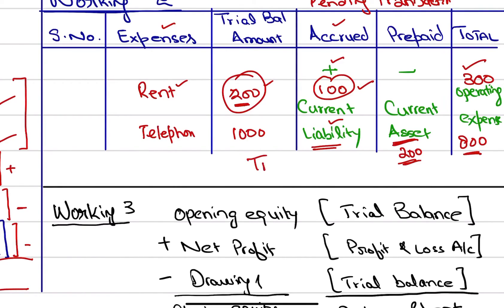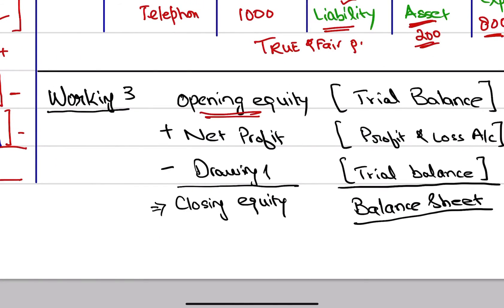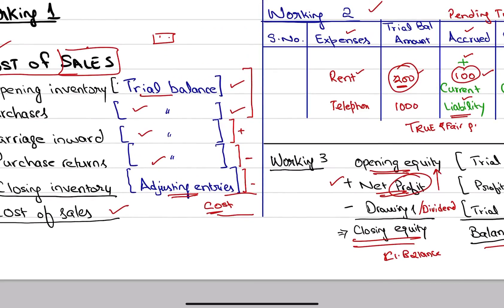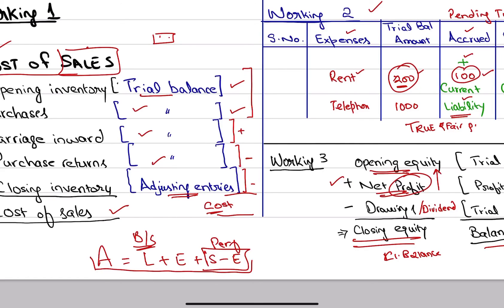We should always show our systems' true and fair picture. Working number three is equity — what is the owner's investment, how much profit the company earned (which is added), and what are the drawings (money taken for personal use), which are subtracted along with dividends. The result is the closing balance of equity shown on the balance sheet. To sum up: assets equal liabilities plus equity plus sales minus expenses. The performance part is the income statement and the position part is the balance sheet. Next, we have two questions to solve.